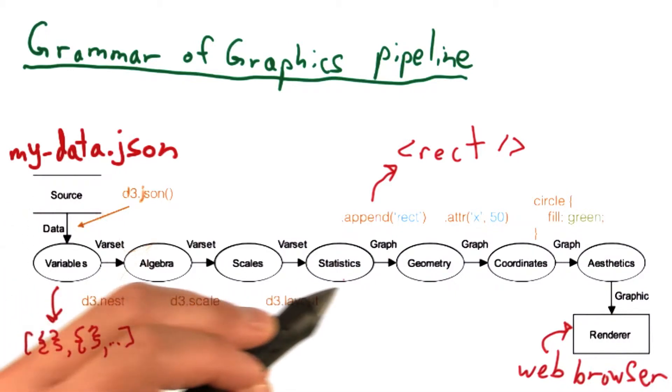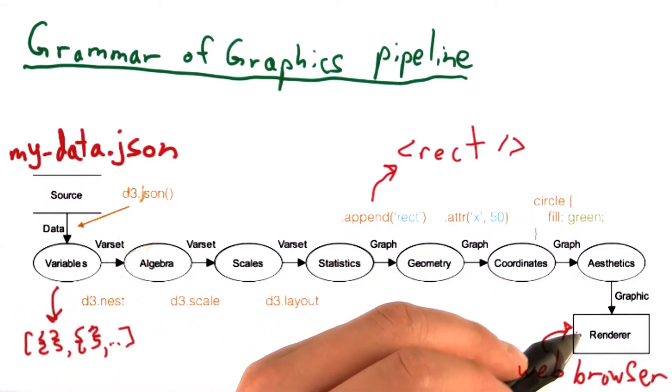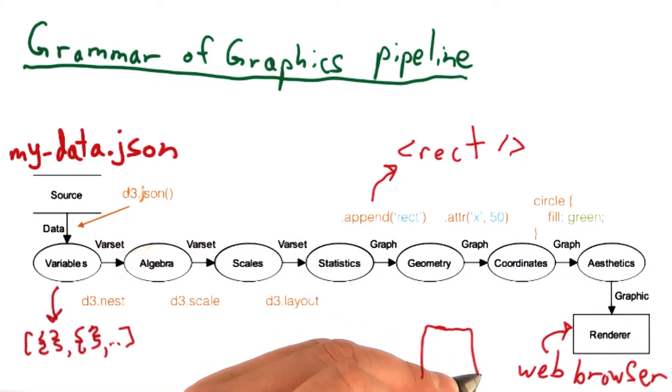Once we chain all these functions together according to this pipeline, the web browser takes the specification and renders a web page filled with all the graphics that we've specified across the chain.